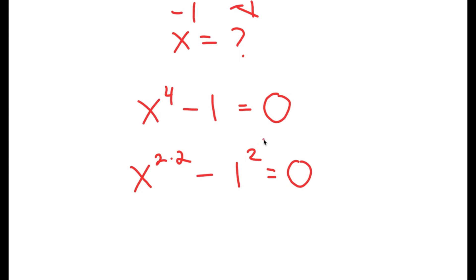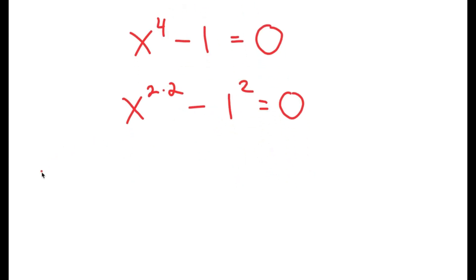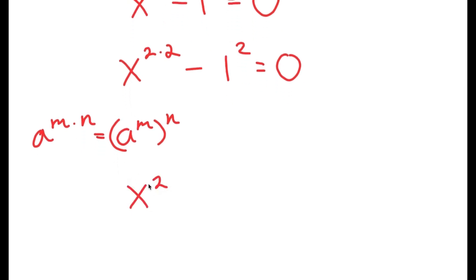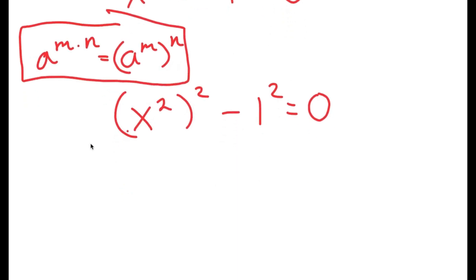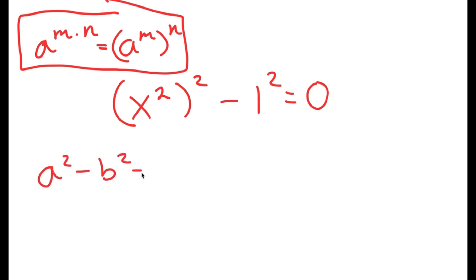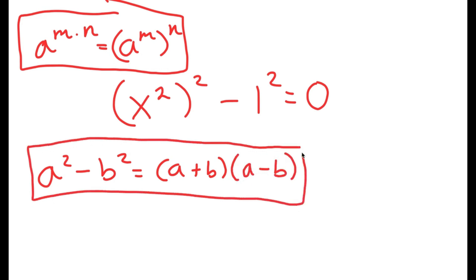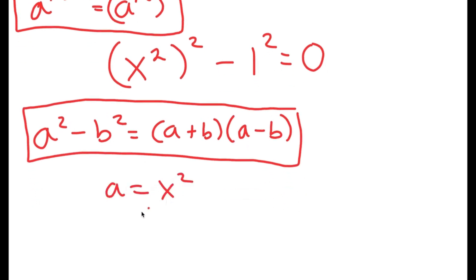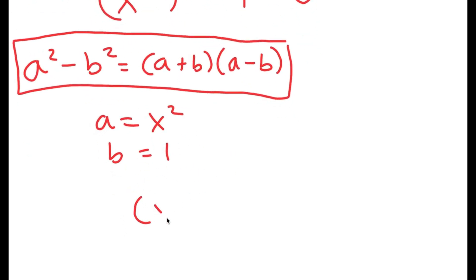The reason I did this is because I can use the property a to the power of m times n is equal to a to the power of m to the power of n. So in this case, x to the power of 2 times 2 is equal to x to the power of 2 to the power of 2. So I have x to the power of 2 squared minus 1 squared is equal to 0. Now another property I can use is a squared minus b squared equals a plus b times a minus b, where a is x squared and b is 1.